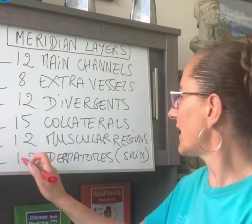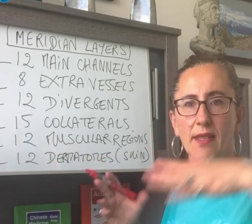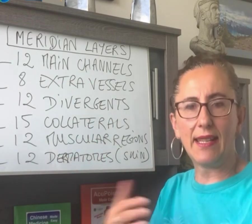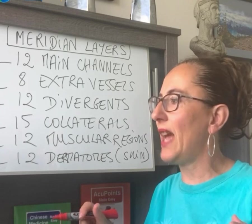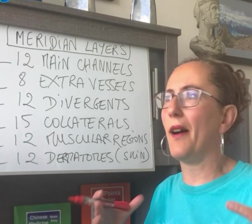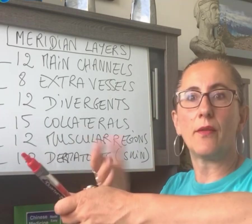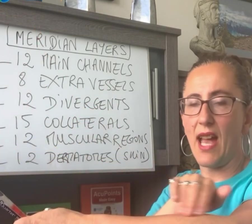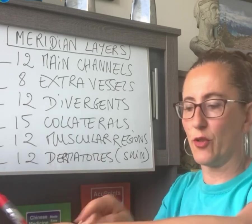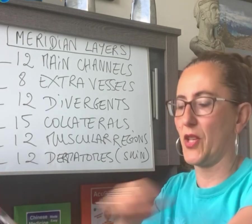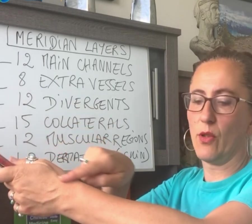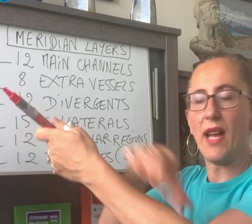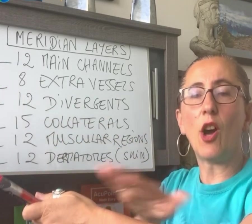The 12 dermatomes are the most surface layer. What they do is correspond to the same area as the 12 regular meridians and address anything on the skin. For example, the large intestine dermatome: the large intestine goes on the lateral posterior side of the forearm on the extensors, going up through large intestine 11, 12, et cetera. The dermatome is basically the band all around the large intestine pathway on the skin surface.